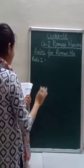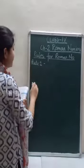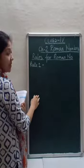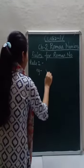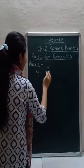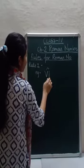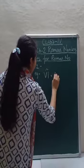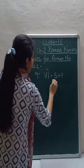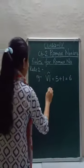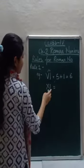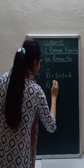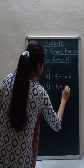Rule number 2 is when a Roman symbol of lower value is written to the right or after the symbol of higher value, the values are added. For example, VI — V denotes 5 and I denotes 1, so the number will be 6. Similarly, XI — lower value is written to the right of higher value, so 10 plus 1 equals 11.